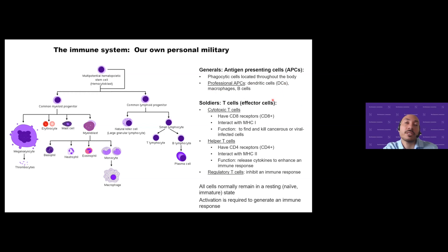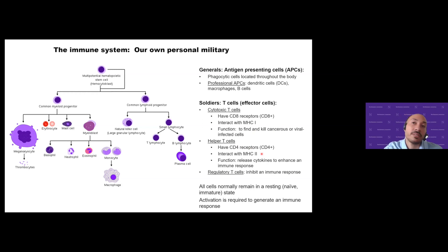The second cell types I want to discuss are the soldiers — the effector cells. These are the T cells. There are several different types: cytotoxic T cells, marked by CD8 receptors, that interact with MHC-1 on the cell surface with the goal of finding, killing, and destroying cancerous or virus-infected cells. The second T cell type are helper T cells, marked by CD4 receptors, that interact with the MHC-2 receptor on specific cell types. Their goal is to support the immune response and direct it through the release of cytokines — hormones that are critical for directing the type of immune response generated.